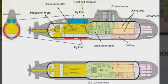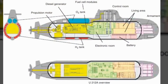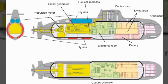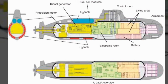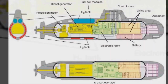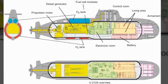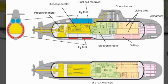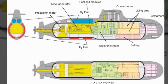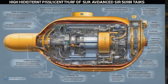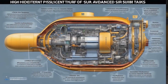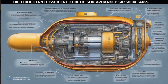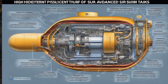What is AIP? AIP is a collection of technologies that allow a non-nuclear submarine to operate without access to atmospheric oxygen. This is typically done by using a stored oxidizer, such as liquid oxygen, to combust fuel and generate electricity. AIP systems can be used to augment or replace the diesel-electric propulsion system of non-nuclear submarines.